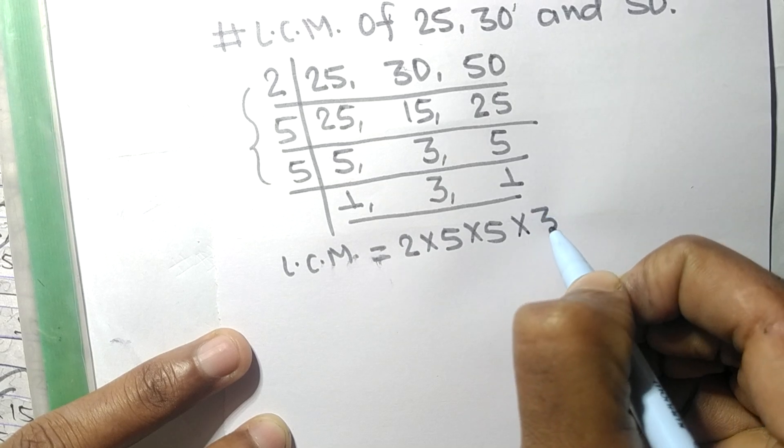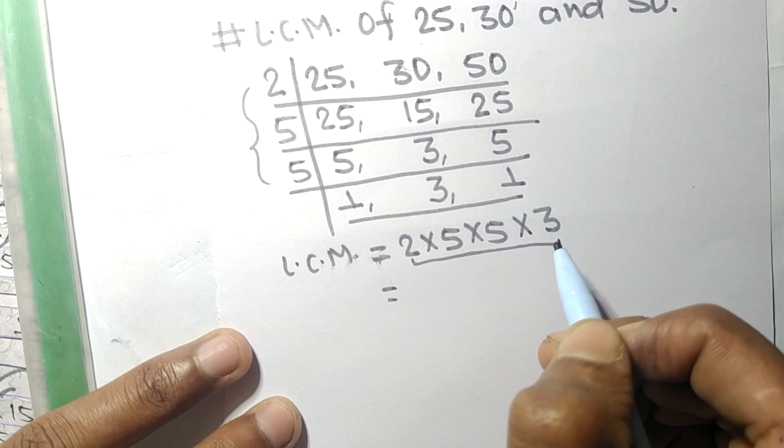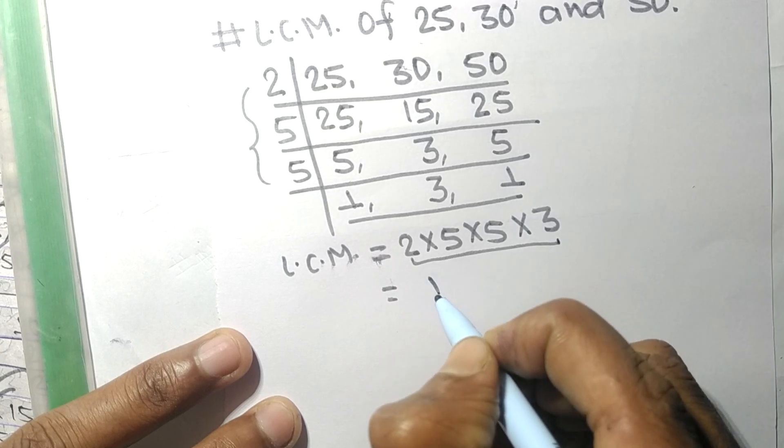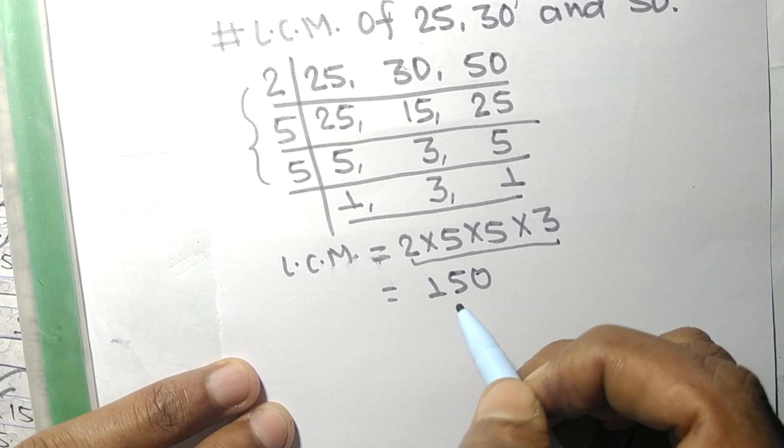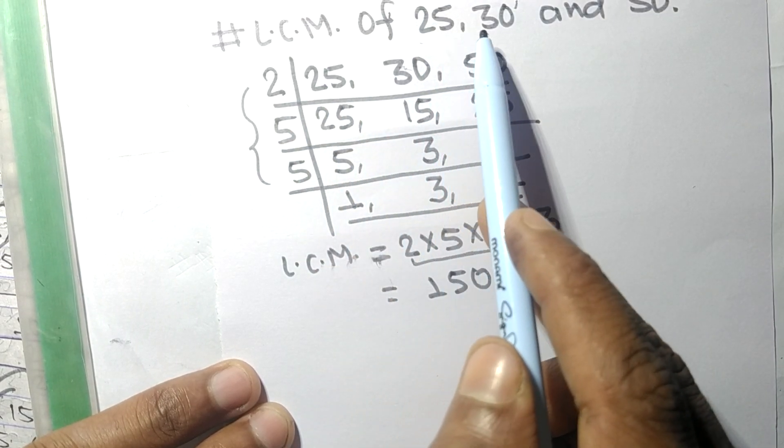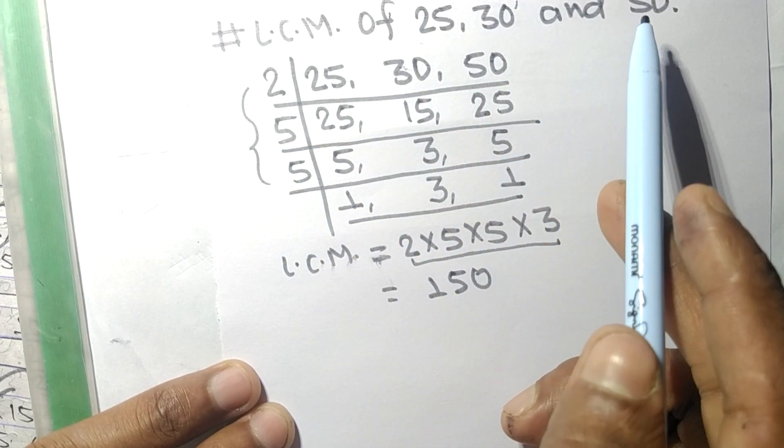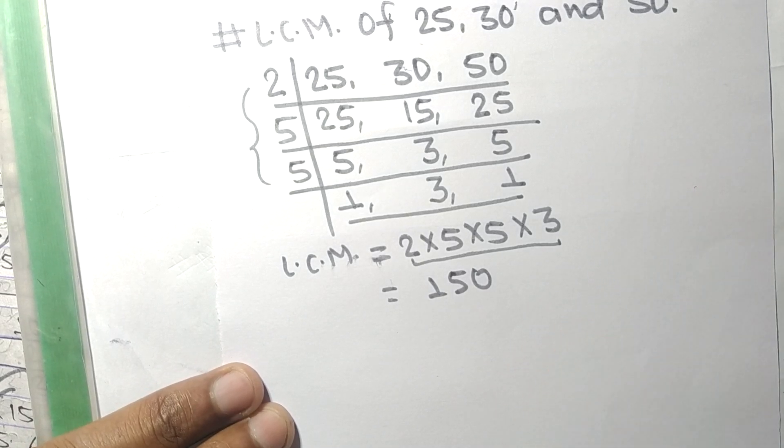So multiplied by 3. So by multiplying all these numbers, we get 150, so 150 is the LCM of 25, 30 and 50. So this much for today and thanks for watching.